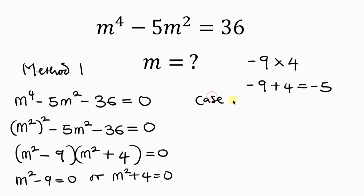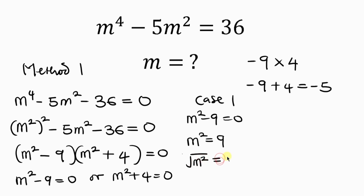For case 1, where we have m squared minus 9 equal to 0, I'm going to be moving negative 9 to the right-hand side, so that we have m squared equal to positive 9. Now to get rid of this square, I'll take the square root of both sides. This is equal to plus or minus the square root of 9. The square root cancels out the square, leaving behind m to be equal to plus or minus 3.